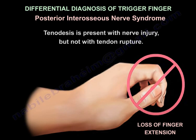Mediastasis is present with nerve injury, but not with tendon rupture — a key differentiating feature.